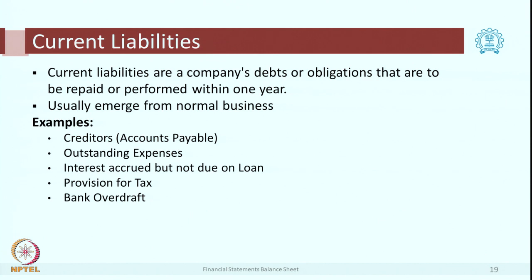One more possible liability is deferred tax liability. Normally the tax liability should be paid within 1 year, but under special circumstances, or because of some specific provision in the law, if it can be paid after more than 1 year, it will be called as a deferred tax liability. The other type is current liability. These are obligations which are likely to be repaid or performed within 1 year, and normally they come from day-to-day business transactions or from the business cycle.